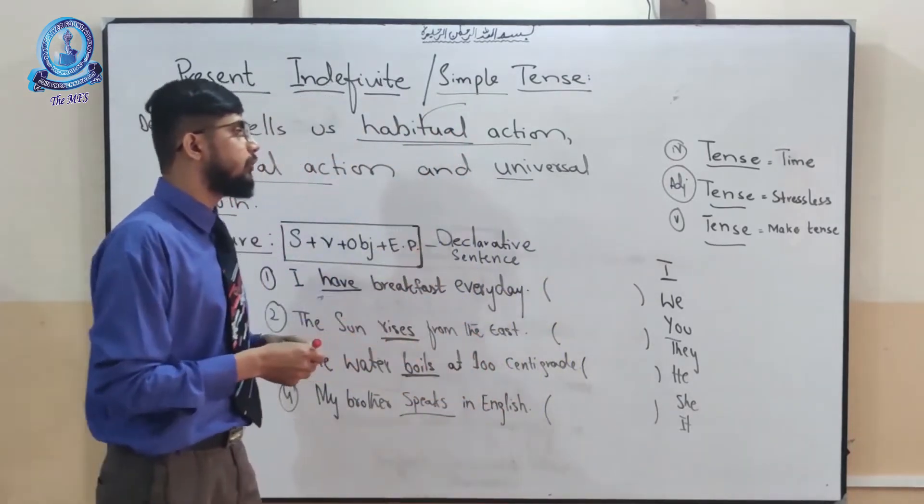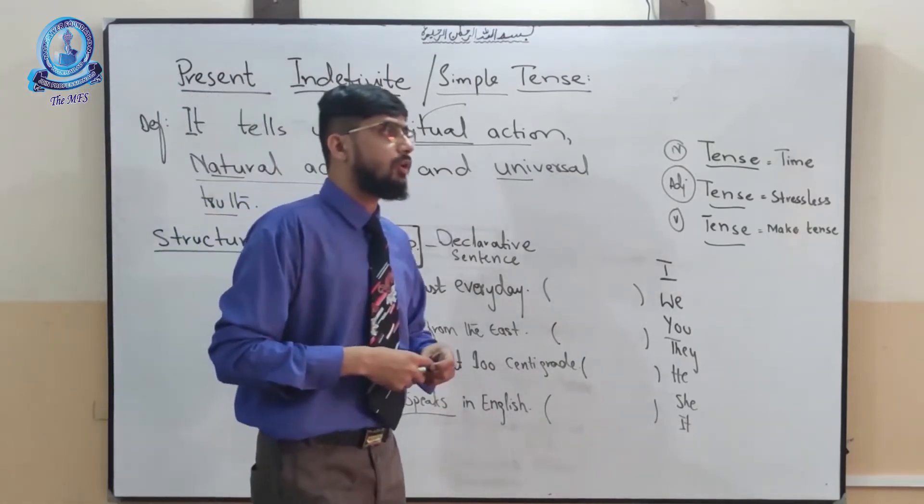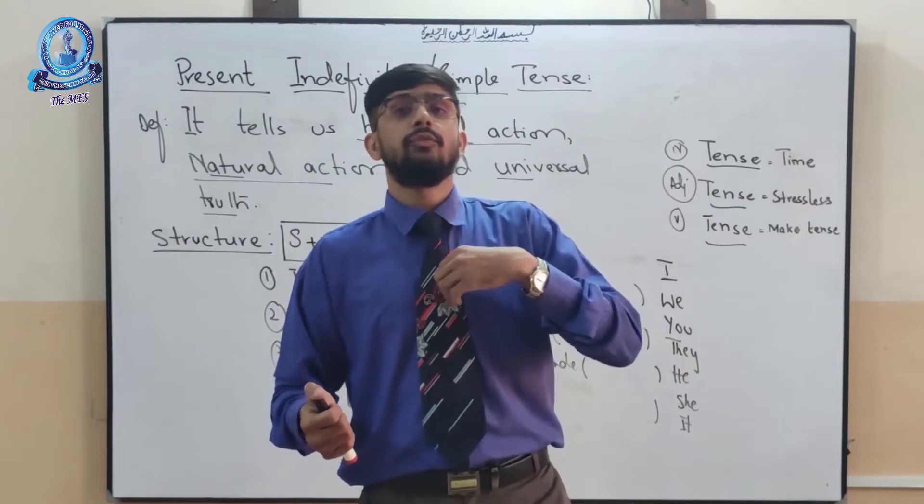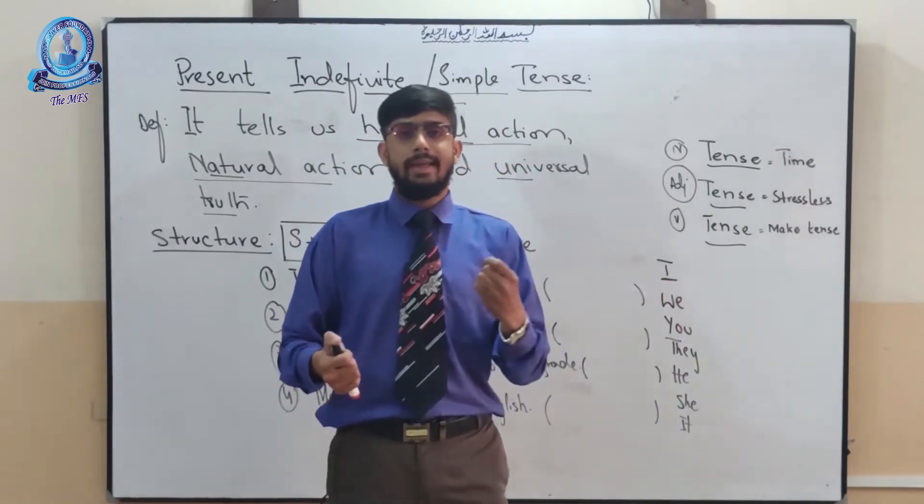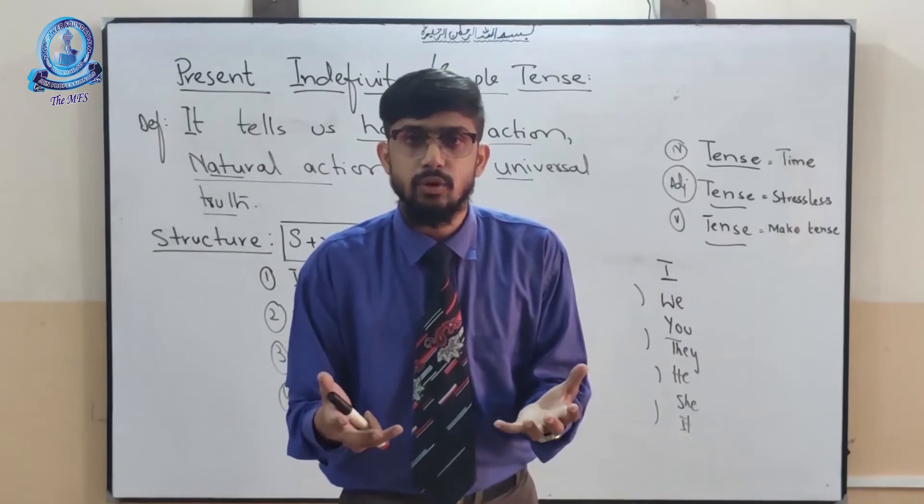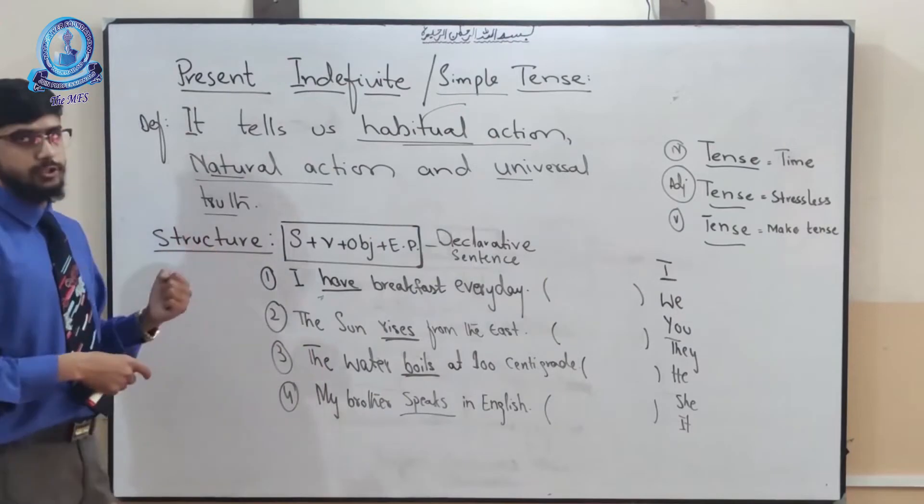The third one is called universal truth. Universal truths are based on our universal things. For example, if we heat the water at 100 centigrade, so it starts boiling. This is called universal truth. Let's come towards our examples and structure.